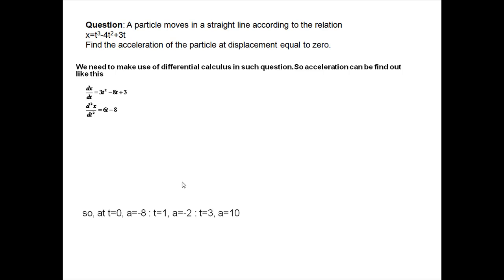So, dx/dt = 3t² - 8t + 3. Now, the second differential will give the acceleration. Again differentiating the equation we get d²x/dt² = 6t - 8. This is the acceleration of the particle at any point in time.